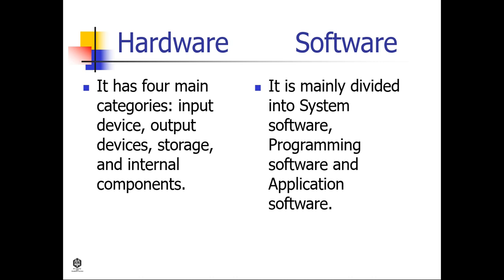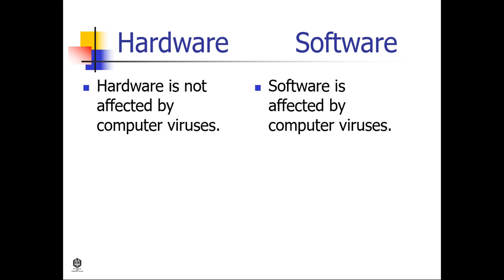Hardware has four main categories: input devices, output devices, storage, and internal components, while software is mainly divided into system software, programming software, and application software. Hardware is not affected by computer viruses, but software is affected by computer viruses.